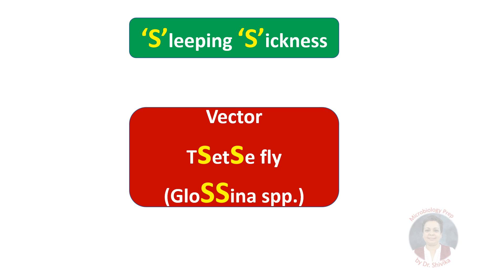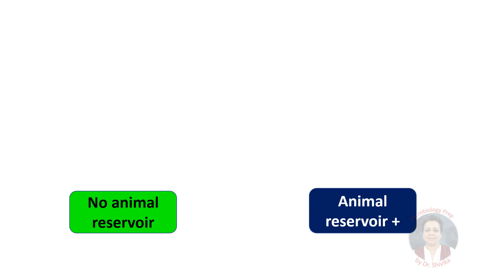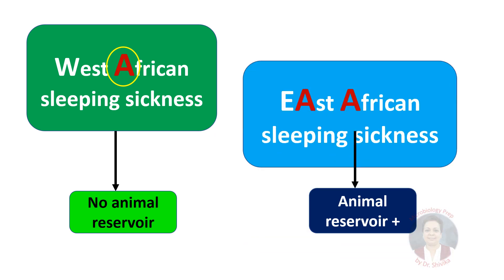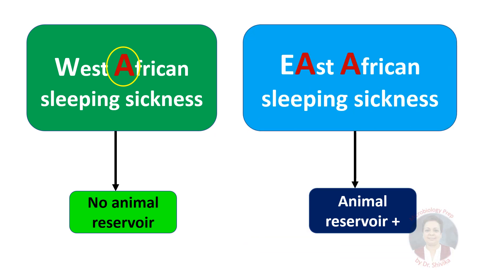It's difficult to remember which subspecies has no animal reservoir. When we write 'West African sleeping sickness caused by gambiense,' notice there is only one A in 'gambiense' — so this has no animal reservoir. Whereas 'East African sleeping sickness caused by rhodesiense' has two A's in 'rhodesiense,' so this has an animal reservoir such as domestic cattle.